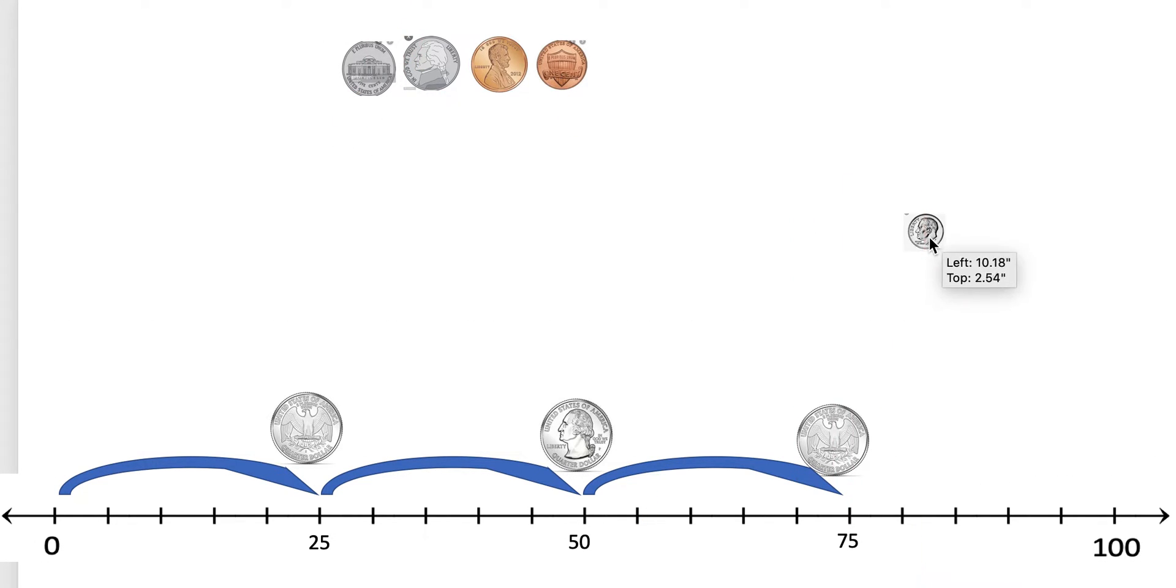Next I have my dime and my dime is worth 10. So I'm going to hop two spaces and that is 5, 10. I'm going to drag my dime down. I know that 75 plus 10 is 85. So far I'm at 85 cents.